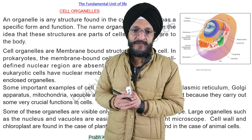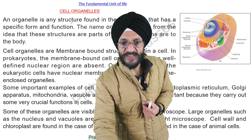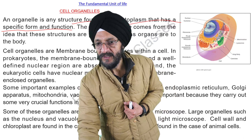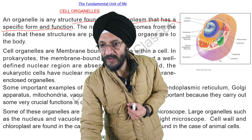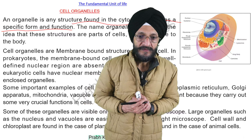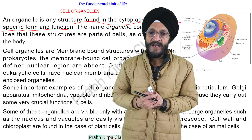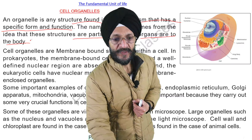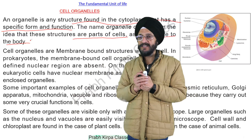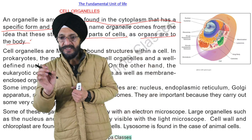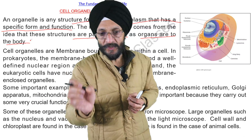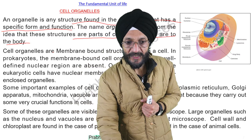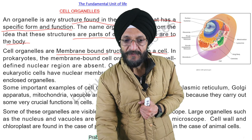An organelle is a structure found in the cytoplasm that has a specific form and function. The name 'organelles' comes from the idea that these structures are parts of the cell just as organs are to the body. As a body has organs, in the same way a cell has small structures known as organelles. These are the parts of the cell, and cell organelles are membrane-bound structures within a cell.